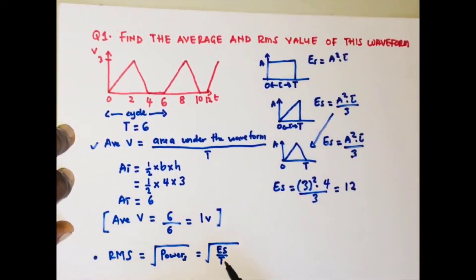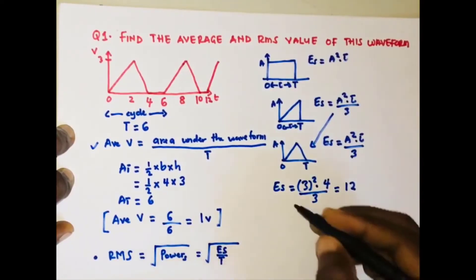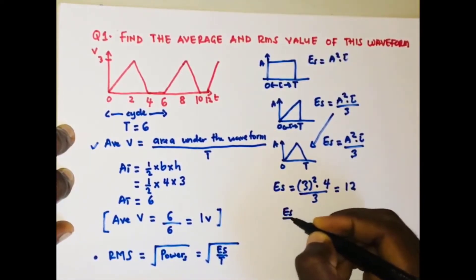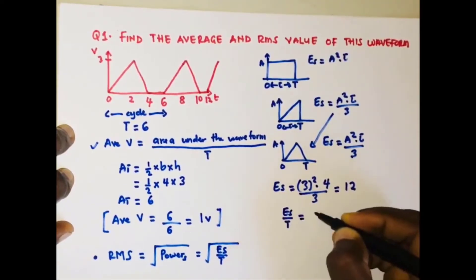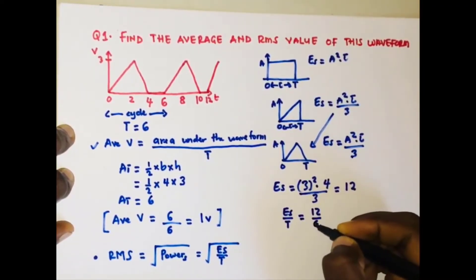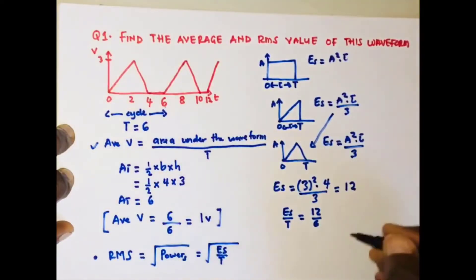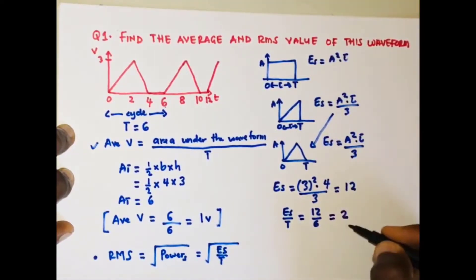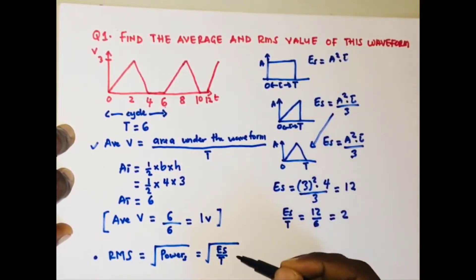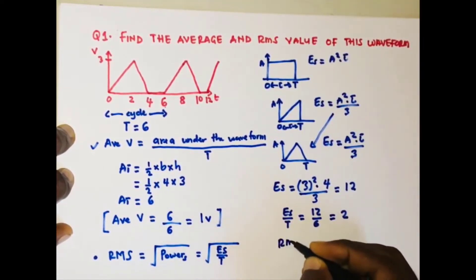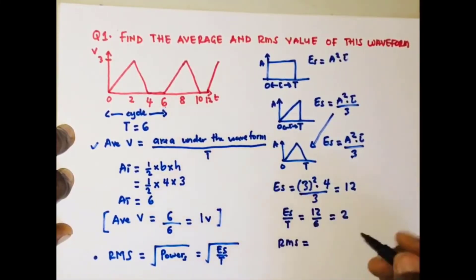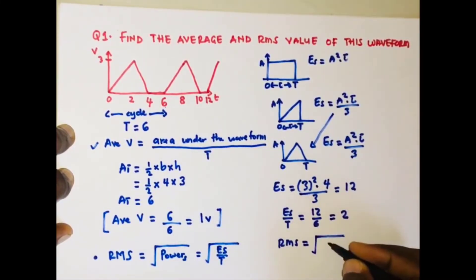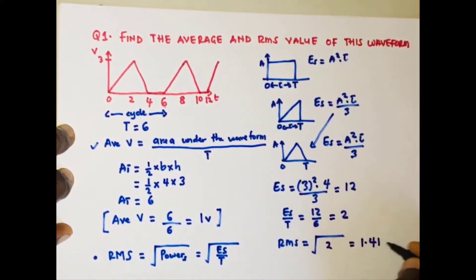We divide the energy by the period of the signal. So 12 divided by 6 equals 2. Taking the square root, the RMS value of this waveform is the square root of 2, which equals 1.4142.